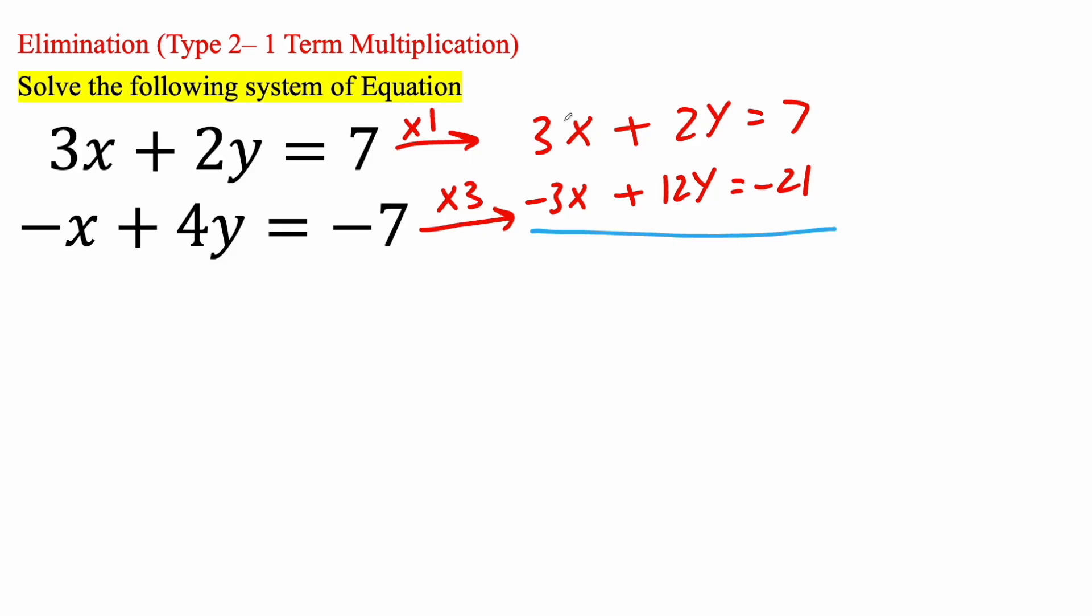And we're about to see why this is called elimination method. So we're going to add these two pieces. 3x minus 3x, it cancels out, gets eliminated.